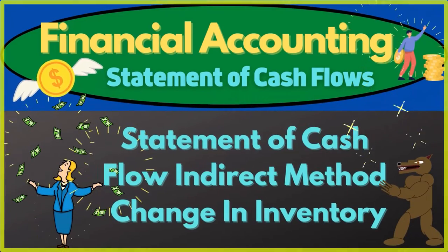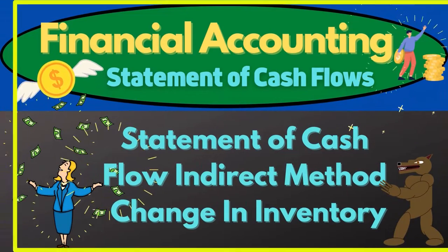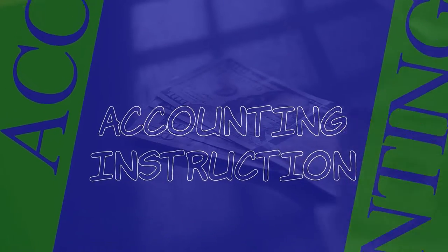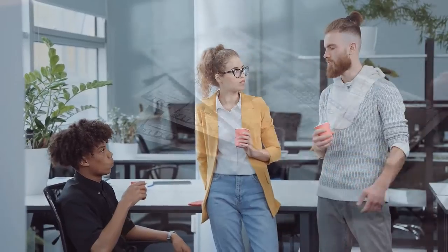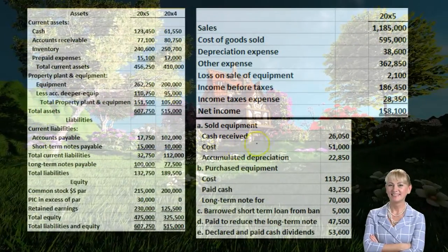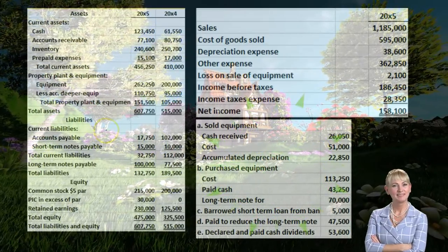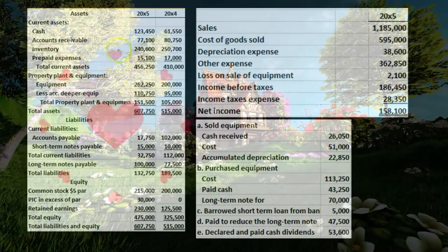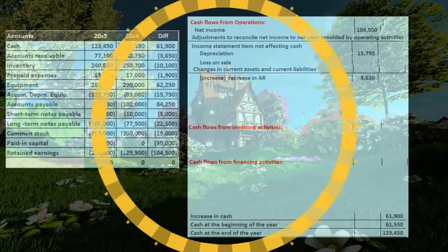In this presentation, we will continue putting together our statement of cash flows using the indirect method, now taking a look at the change in inventory. We're going to be using our materials here with a comparative balance sheet, the income statement, and some added information, working primarily at this time from a worksheet that was made from the comparative balance sheet.